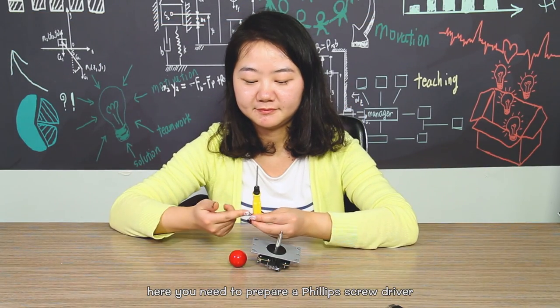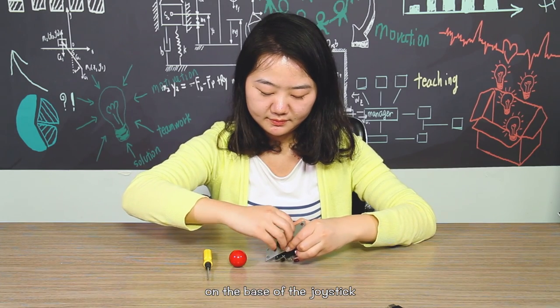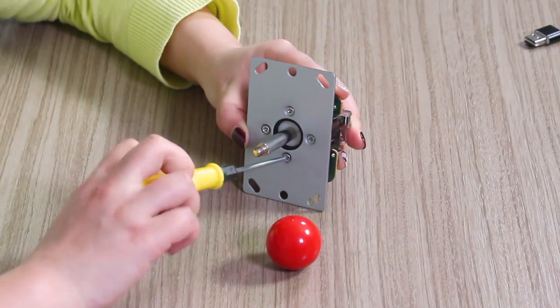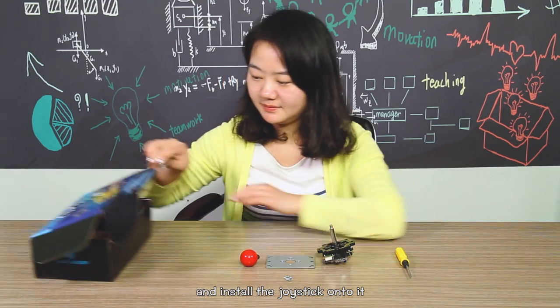Here you need to prepare a Phillips screwdriver. Take down the black piece on the base of the joystick and disassemble the four screws. Take out the box and install the joystick on it.